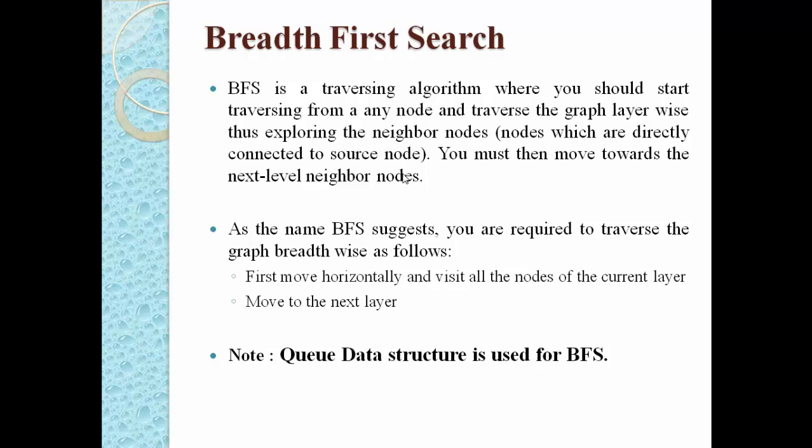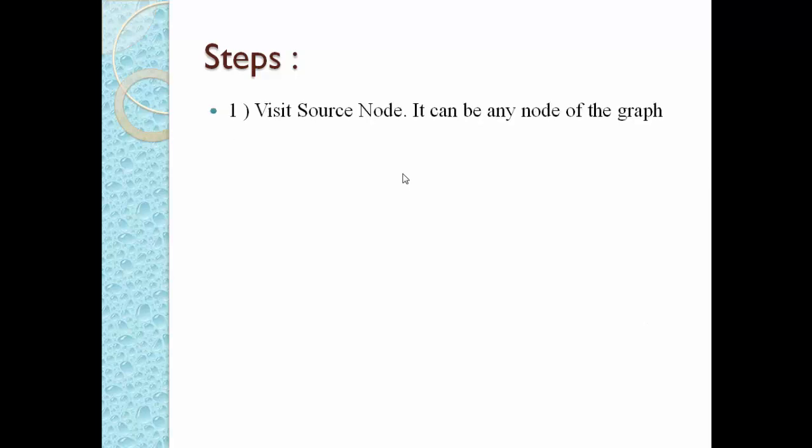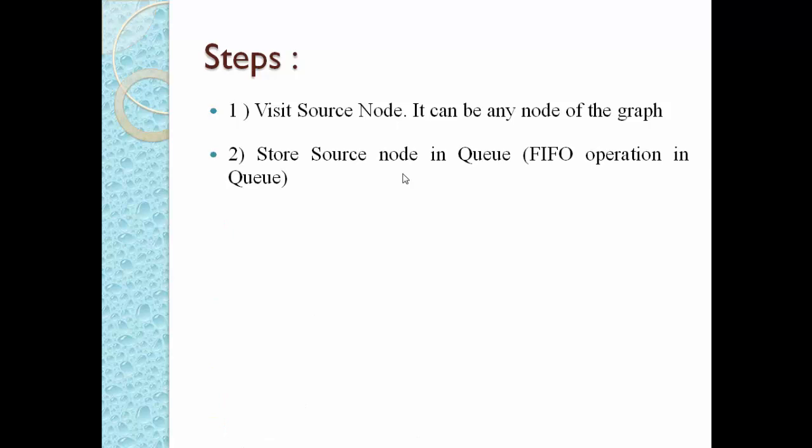Let us understand the steps of BFS before looking at an example. Step one: visit the source node — it can be any node of the graph. Step two: store the source node in the queue by performing an enqueue operation. Since we are using a queue with FIFO operation, we store our source node inside the queue first.